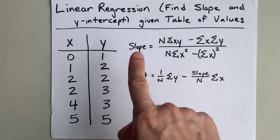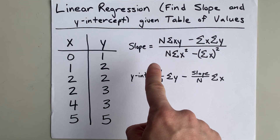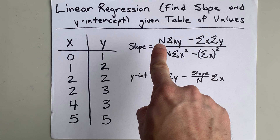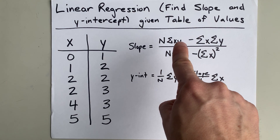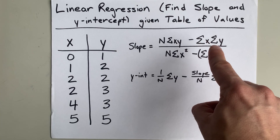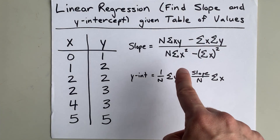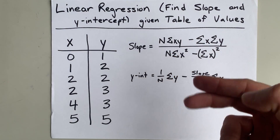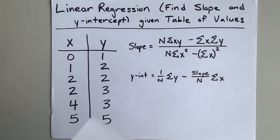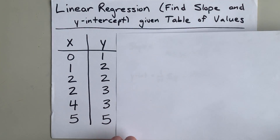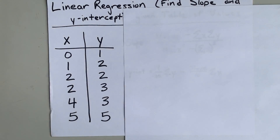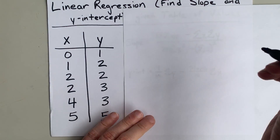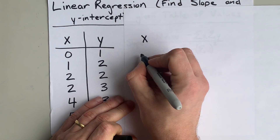The formula for slope involves the number of points you have, the sum of all the x·y's, sums of the x's, sums of the y's, and x-squareds as well. So what we're going to do is copy out this table and add some extra columns.